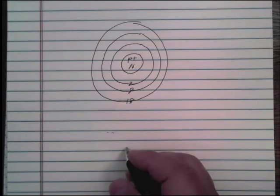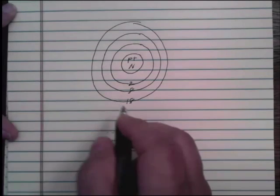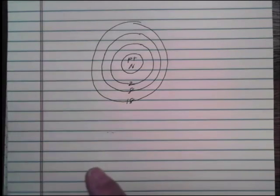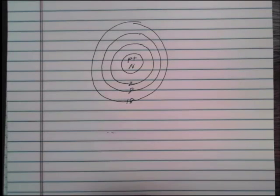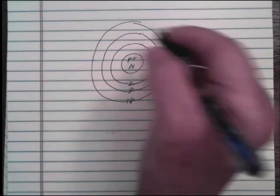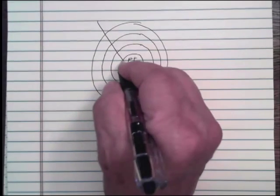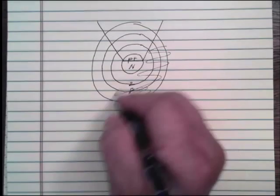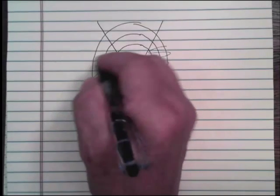This is just a very basic model that helps us understand something we can't see — atoms. I'm going to use this model to help you understand electron configurations. To do that, I'm going to take this basic atom and cut it like a piece of pie, getting rid of the parts that would confuse the issue, and bring that section down here.